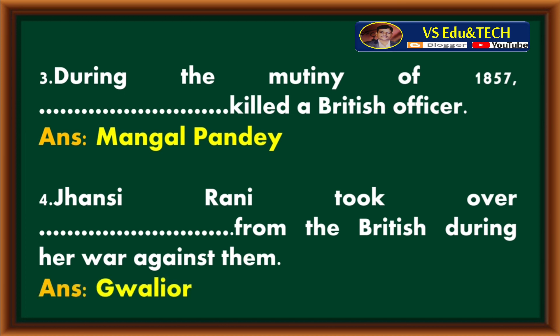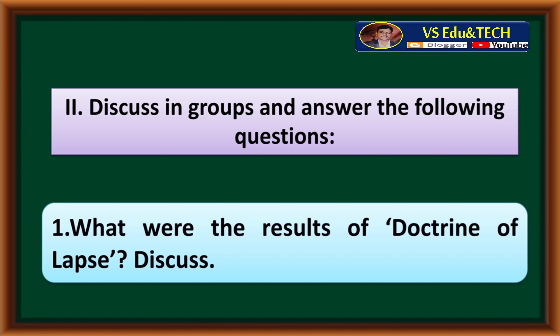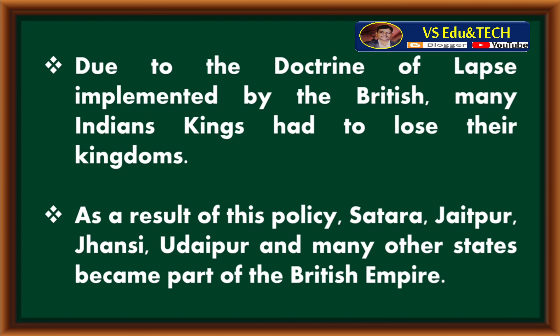Now let's move to the second section — Discuss in groups and answer the following questions. First question: What were the results of the Doctrine of Lapse? Due to the Doctrine of Lapse implemented by the British, many Indian kings had to lose their kingdoms. As a result of this policy, Satara, Jaipur, Jhansi, Udaipur and many other states became part of the British Empire.